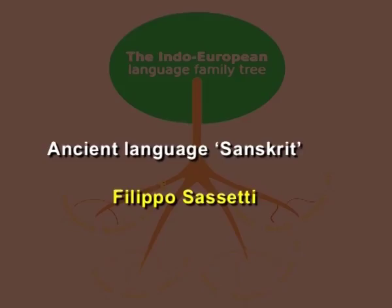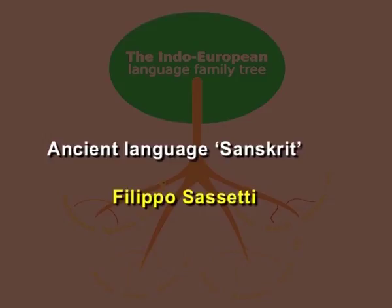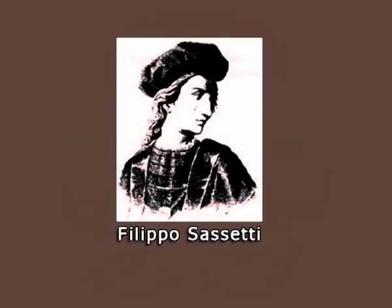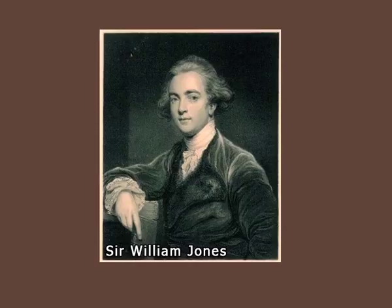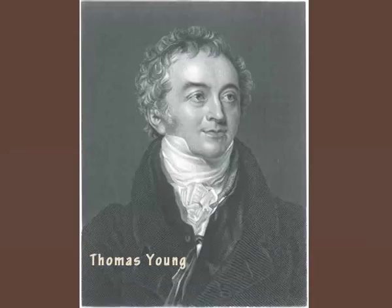The first account by a European to mention the ancient language Sanskrit came from Filippo Sassetti, a merchant who traveled to the Indian subcontinent. Writing in 1585, he noted some word similarities between Sanskrit and Italian. Later, Sir William Jones, a famous linguist and jurist, discovered an etymological connection between English and Sanskrit in 1783.